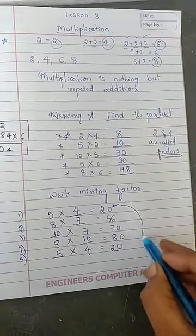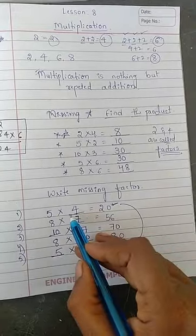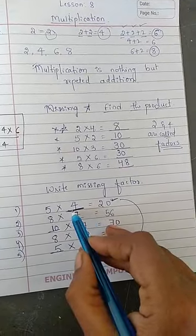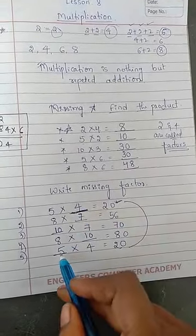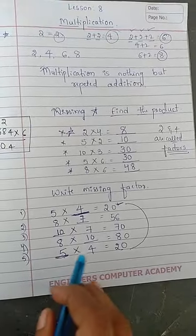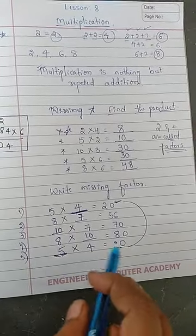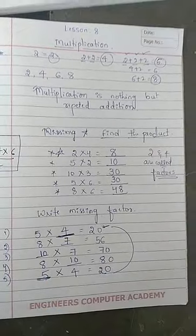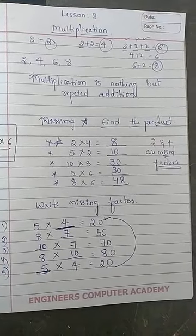That is 5×4 is 20. See the first one and the last one are same. But the asked factor is different. Here they have asked the second factor. Here they have asked the first factor. Simply you have to multiply to get the answer. This is today's class. I hope this is clear. Thank you.